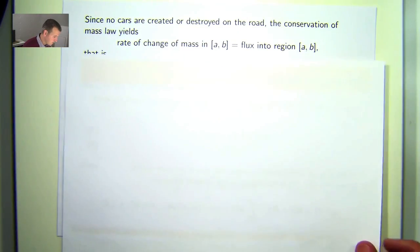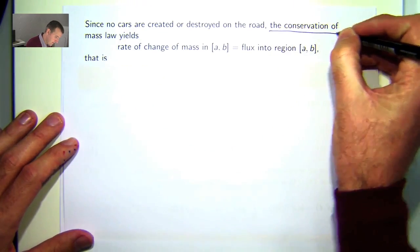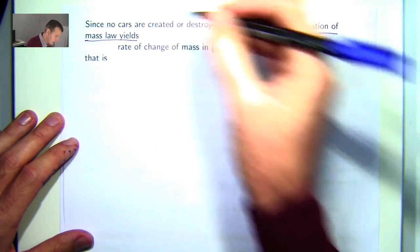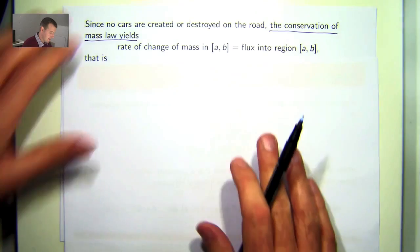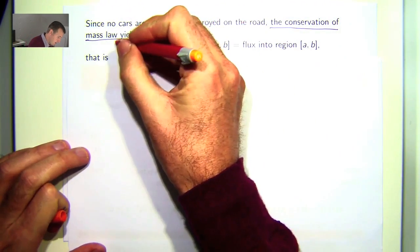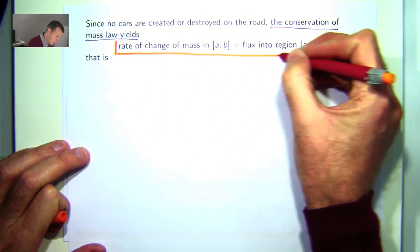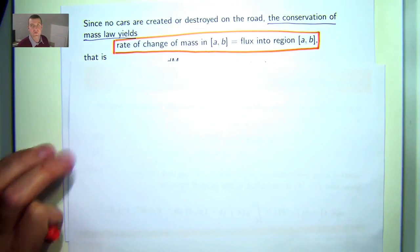Now, we do make an assumption based on conservation law in the sense that no cars are created or destroyed on the road. So none leave the road and none join the road. So what this means is that the rate of change of mass in the interval ab is equal to the flux into the region.